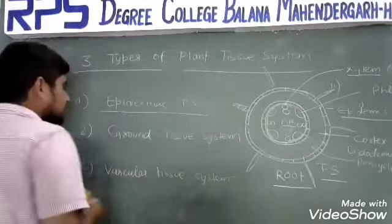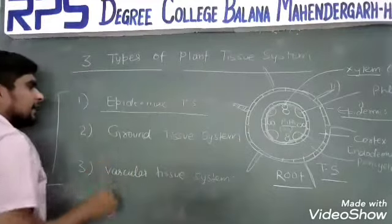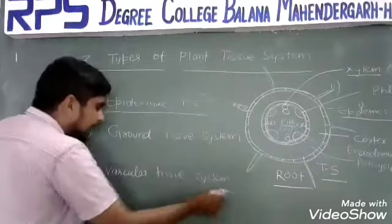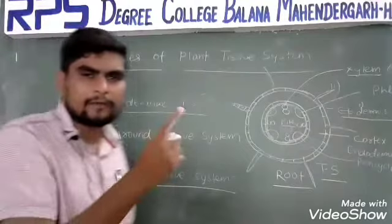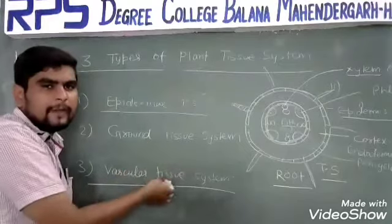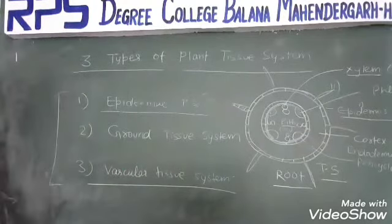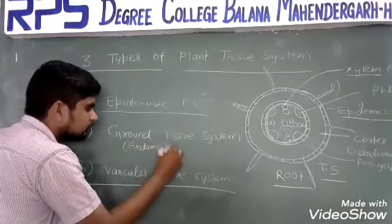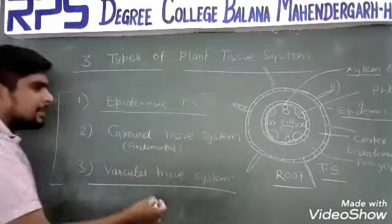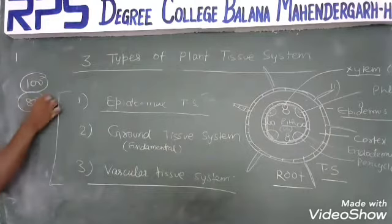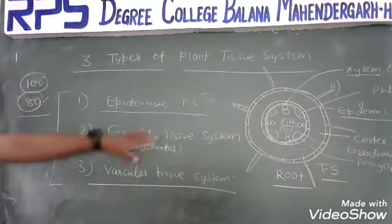Next is the ground tissue system. The ground tissue system — all of the tissues other than epidermal and vascular tissues will form the ground tissue system. It is also called the fundamental tissue system. A major part of any organ — if a root has 100 tissues, 80% of the tissues will be of the ground tissue system.